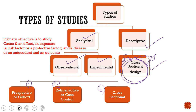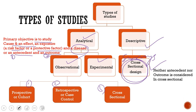For analytical studies, the primary objective is to study cause and effect. There is an exposure — either a risk factor or a protective factor. For example, giving vaccination protects a person, while a virus represents a risk factor increasing vulnerability to a disease. So there is an antecedent and there is an outcome. In analytical studies there must be an antecedent first, and there must be an outcome as well.